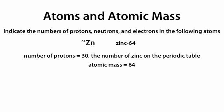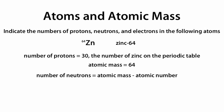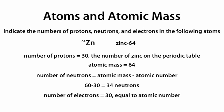The atomic mass is equal to 64, given in the top left corner next to the symbol, or next to the dash in zinc-64. The number of neutrons is always equal to the atomic mass minus the atomic number: 64 minus 30 equals 34 neutrons. The number of electrons is equal to 30, because it's always equal to the atomic number, or the number of protons.